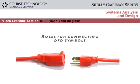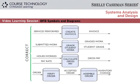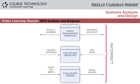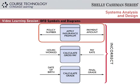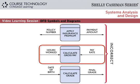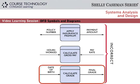Now that you're familiar with the DFD symbols, you need to use them properly. For example, a process must have both input and output. Here are some correct examples. On the other hand, here are some incorrect examples. In the first example, there is output but no input. In the second example, there is input but no output. In the third example, there is input and output, but the input could not logically produce the output.